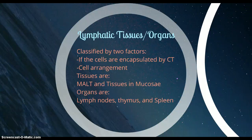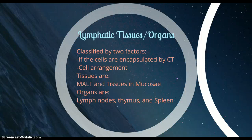Let's overview some things to know about lymphatic tissues and organs before we start talking about them specifically. They're classified by two things: the arrangement of their cells — so if they are spread out diffusely or in a distinct manner — or if their cells are encapsulated, meaning the organ or tissue is encapsulated by connective tissue. The tissues are MALT, which stands for mucosa-associated lymphatic tissue, and tissues in your mucosa. And then there are lymphatic organs — lymph nodes, your thymus, and spleen.